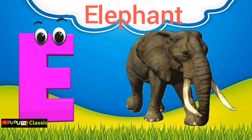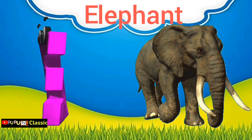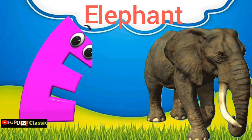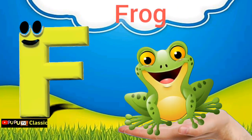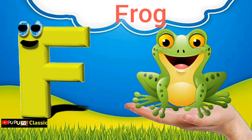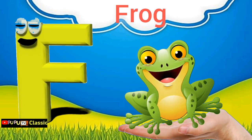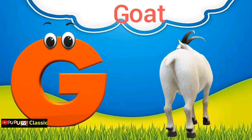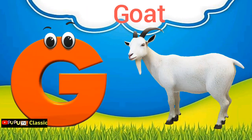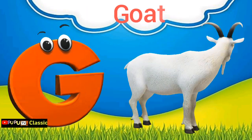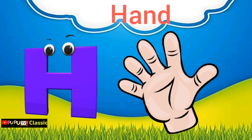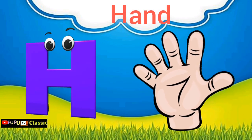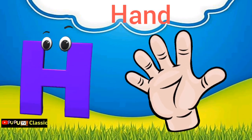E is for Elephant, E-E-Elephant. F is for Frog, F-F-Frog. G is for Goat, G-G-Goat. H is for Hand, H-H-H-Hand.